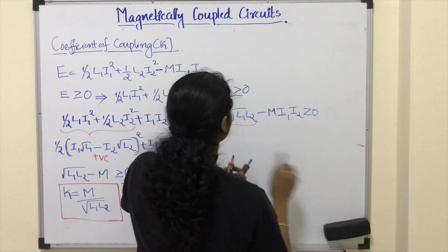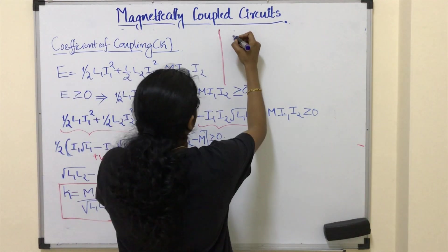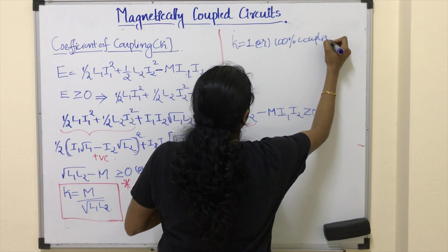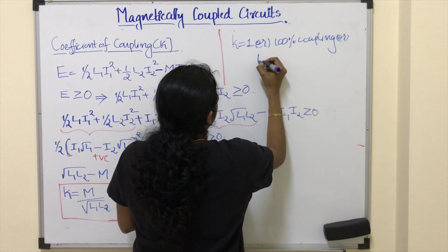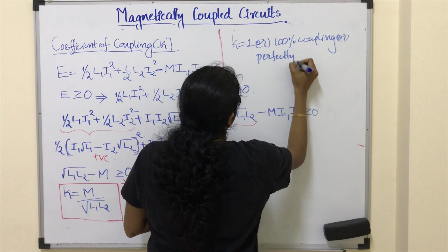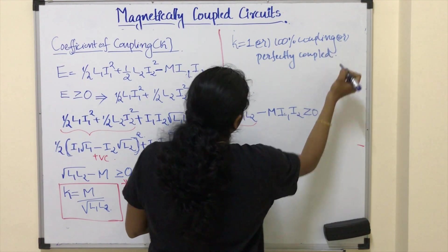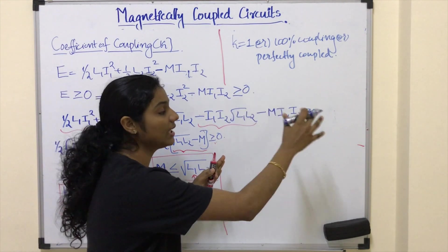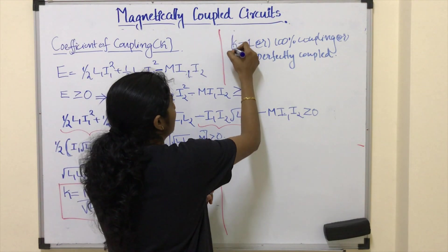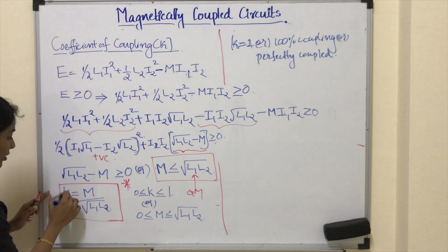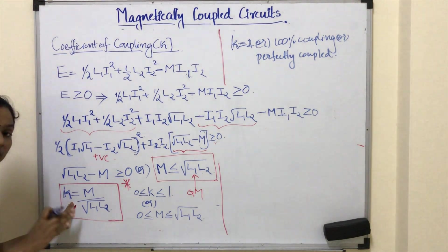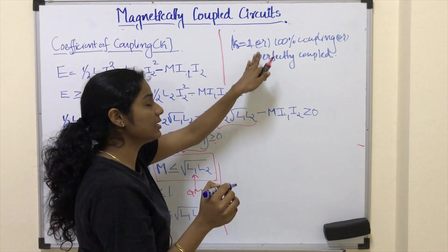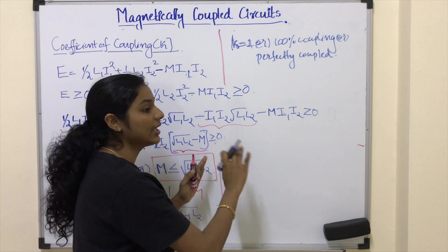If K equals 1, that means 100% coupling, or perfectly coupled. Perfectly coupled means if coil 1 produces a certain magnetic flux, all of that flux will be linked with the other coil. Coefficient of coupling K can be defined as the measure of coupling between two coils. So if K equals 1, all the flux produced by coil 1 links with coil 2.